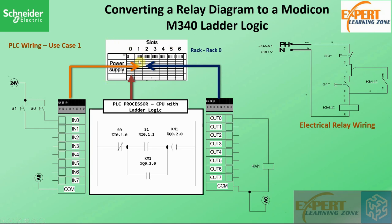Our PLC processor is located on slot 0 in the rack — this is rack 0. The processor is always located on slot 0, and beside it is the power supply. Our input module is in slot 1 and our output module is in slot 2. These are different address locations or references that we use to access different pins on the input and output modules.